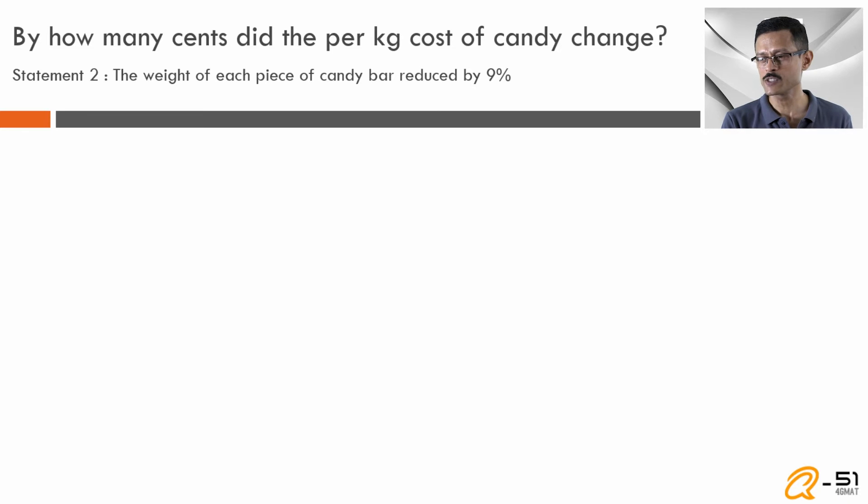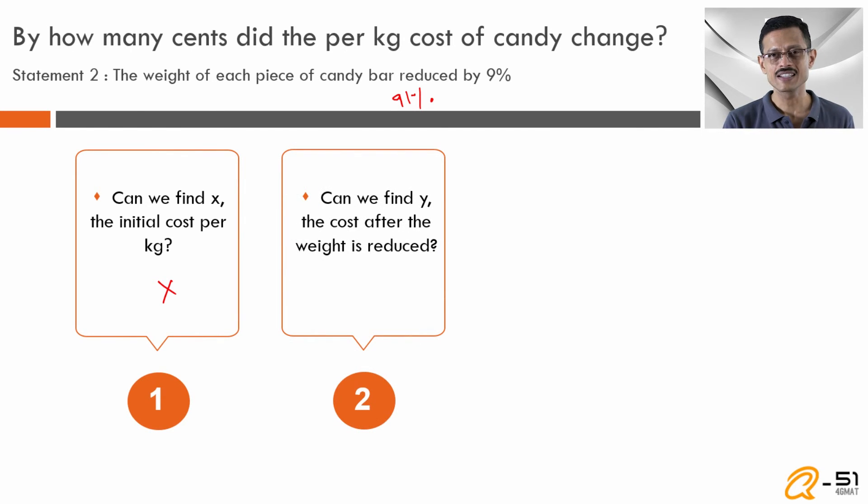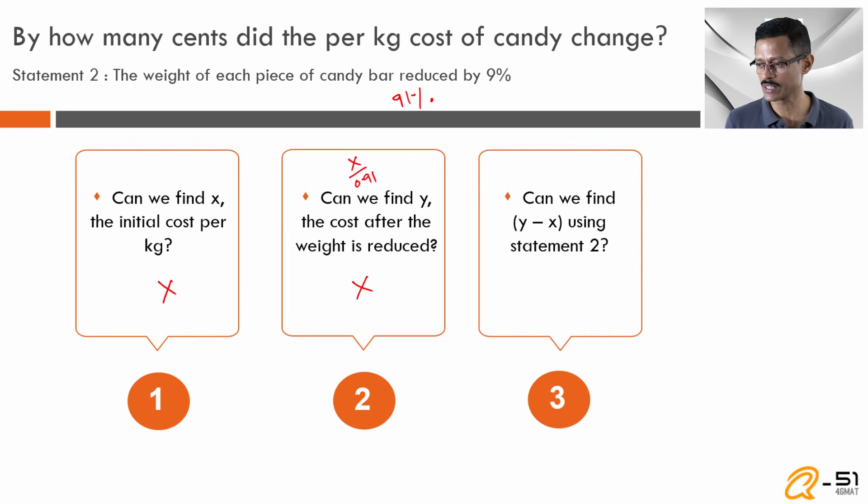Statement 2: the weight of each piece of candy bar reduced by 9%, so it has come down to 91% of whatever it was initially. Do we know the initial cost? Obviously no is the answer. Do we know the new cost? Yes, the weight has come down by 9%, so the new cost is going to be the old cost x divided by 0.91. But do we know x? We do not know x. So we will not be able to find y either. We cannot find x, we cannot find y. As it went with statement 1, so it goes with statement 2. Y minus x we will not be able to find. So we can rule out statement 2 also. Statement 2 is not sufficient.